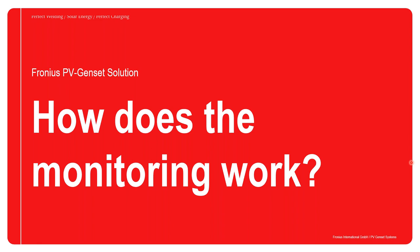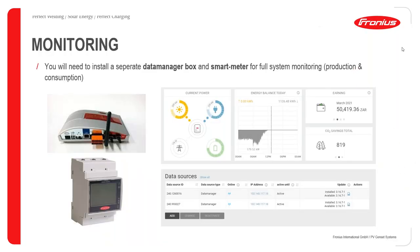For full system monitoring, purchase an additional data manager box and a Fronius smart meter. The data manager box uses its own 12V DC power supply and connects to the Fronius smart meter over Modbus RTU. On SolarWeb, you will have two data managers: one for inverters communicating with the PV controller, and one for the data manager box communicating with the smart meter. Combining these two on SolarWeb gives a full analysis of production and consumption — showing what the grid or genset is producing, what the PV is producing, and what the load is consuming.